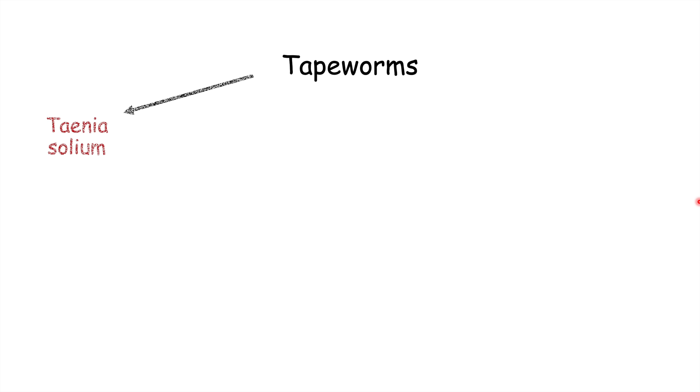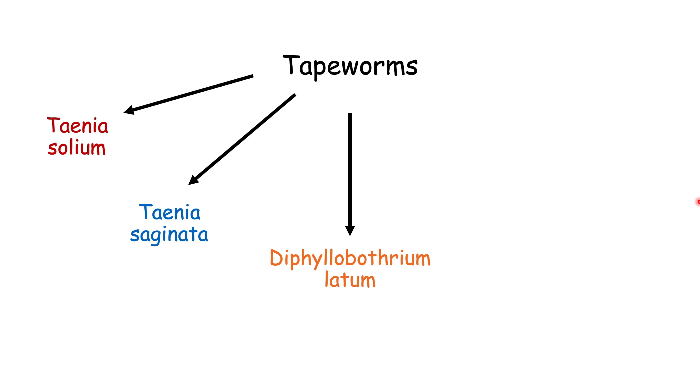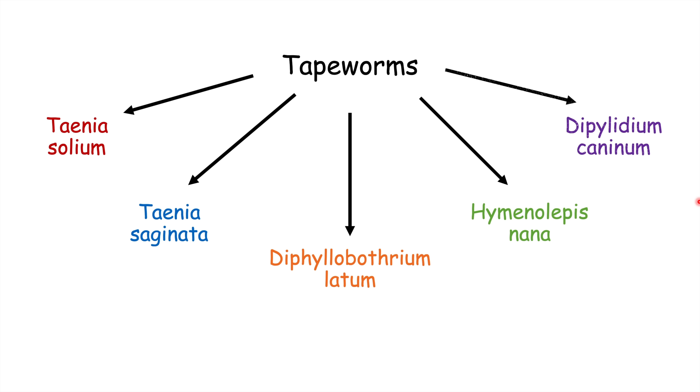There are a variety of tapeworm species, but we're going to talk about a particular group that are more common in humans. The signs and symptoms and complications discussed in this lesson will come from these particular species: Taenia solium, Taenia saginata, Diphyllobothrium latum, Hymenolepis nana, and Dipylidium caninum.